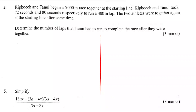Question number four. Kip Koeche and Tanui began a 5000m race together at the starting line. Kip Koeche and Tanui took 72 seconds and 80 seconds respectively to run a 400m lap. The two athletes were together again at the starting line after some time. Determine the number of laps that Tanui had to run to complete the race after they were together.